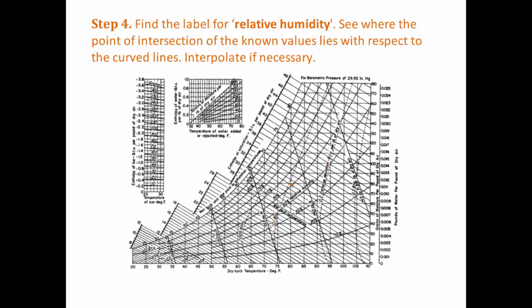The question asked us to find the relative humidity. Again, we need to find the label for relative humidity so we can make sure we're reading the right lines. The relative humidity is represented by curves. The orange dot is in between two of the curves at 51%.